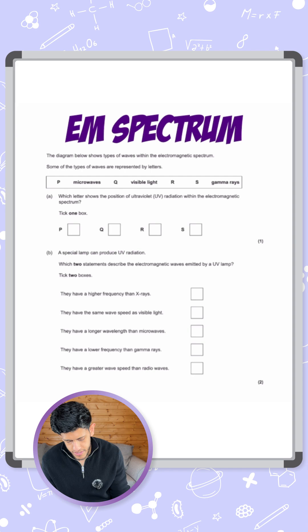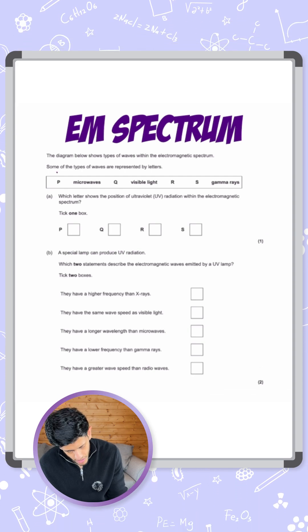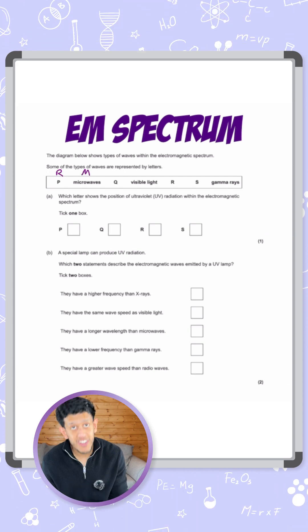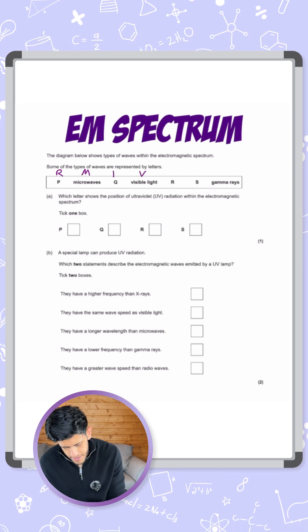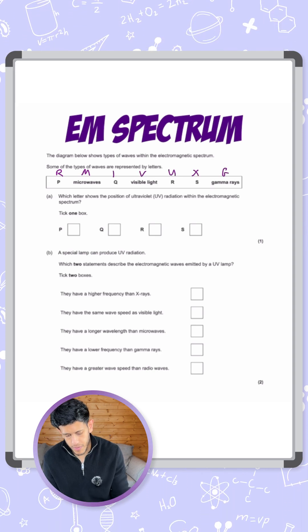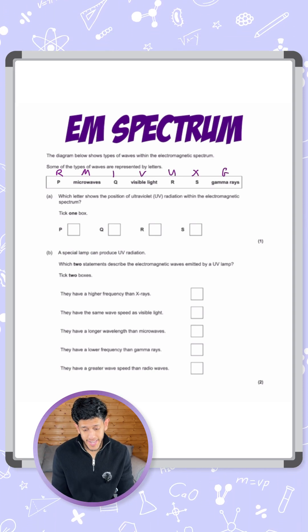If I put the starting letters of each of those underneath here, I'll say red martians - we know martians is correct, it matches with microwaves - invade Venus using x-ray guns. So there we are: R-M-I-V-U-X and G.